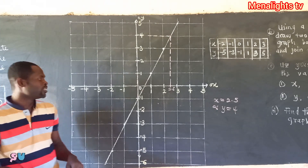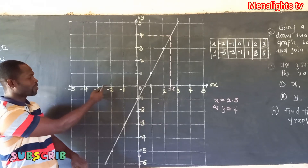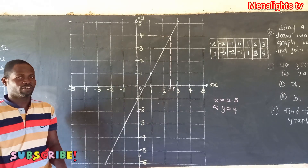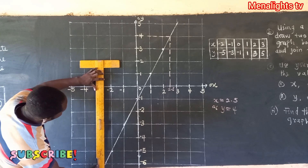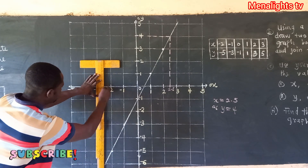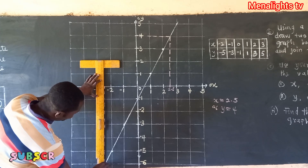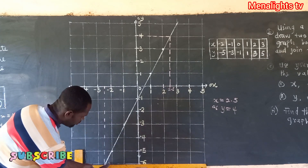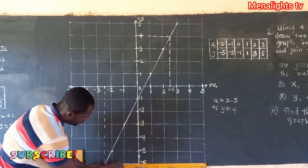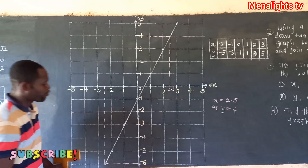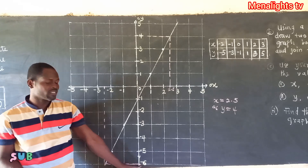To find y when x = -2.5, we locate -2.5 on the x-axis — that's between -3 and -2. We project a short dash line up to touch the line graph, then draw across to the y-axis to read off the y-value. So if x = -2.5, then y = -6.